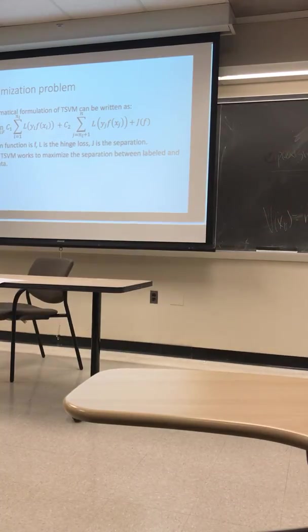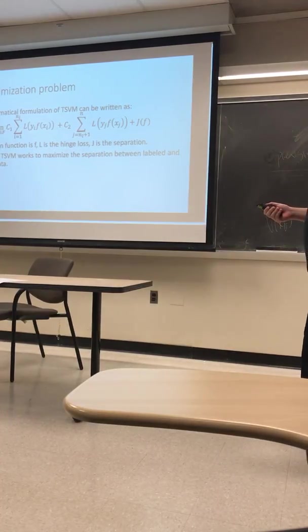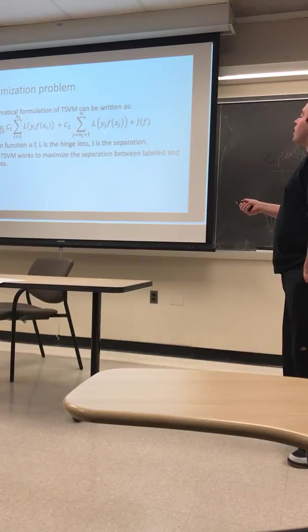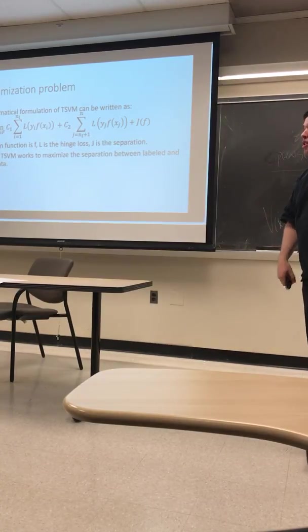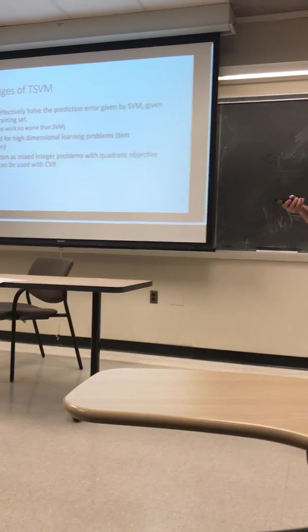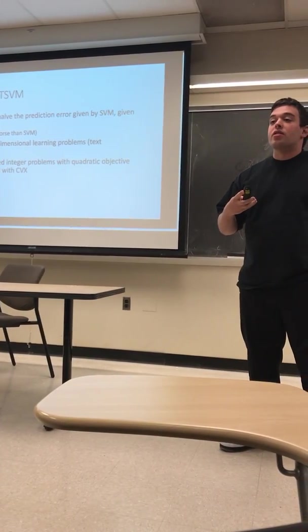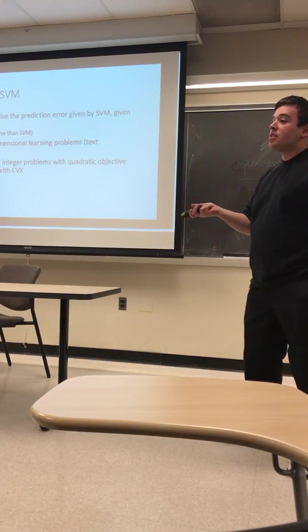In essence, TSVM works to maximize the separation between labeled and unlabeled data, as given by the two loss functions here. And this J function is the separation. TSVM can basically halve the error rate in certain cases of SVM given the same set of training and test data.